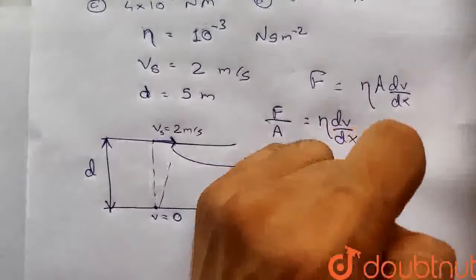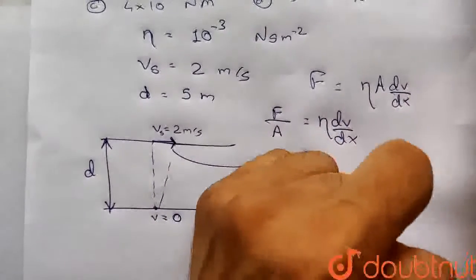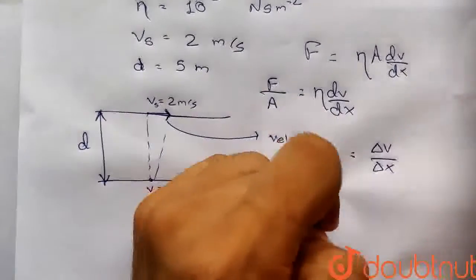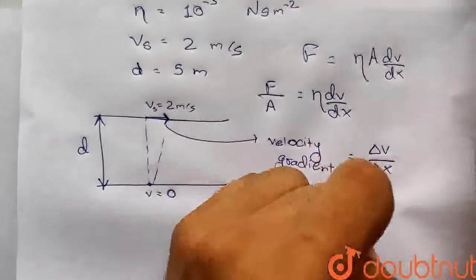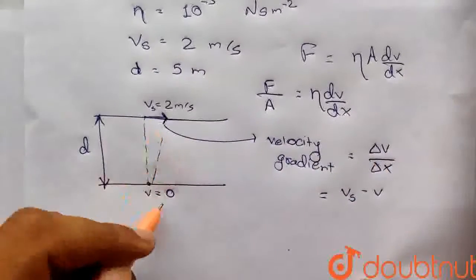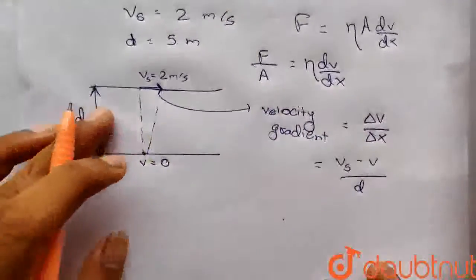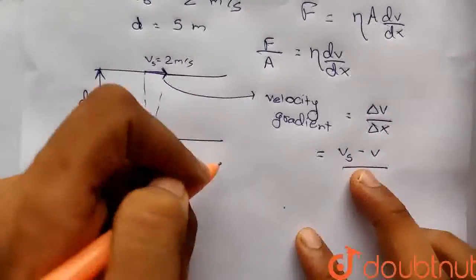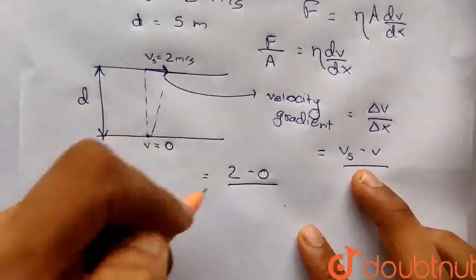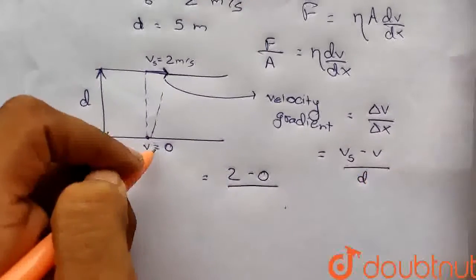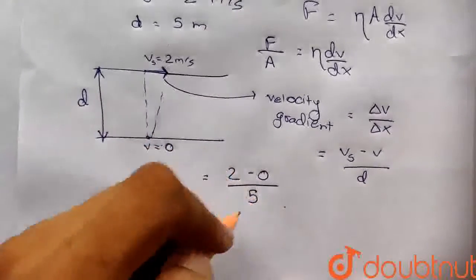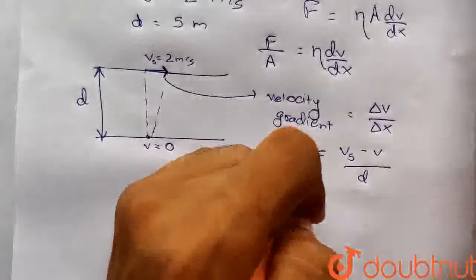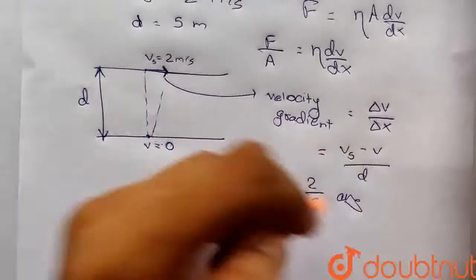Velocity gradient dV by dx equals delta V by delta x. Delta V here is Vs minus 0, which means 2 minus 0, upon depth d. The velocity gradient is 2 meters per second minus 0 upon d. The d value is 5 meters, so this is 2 by 5.